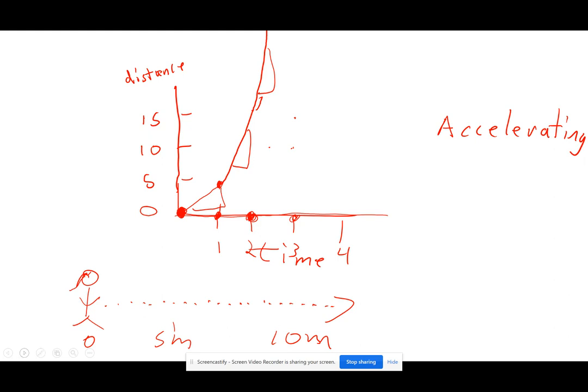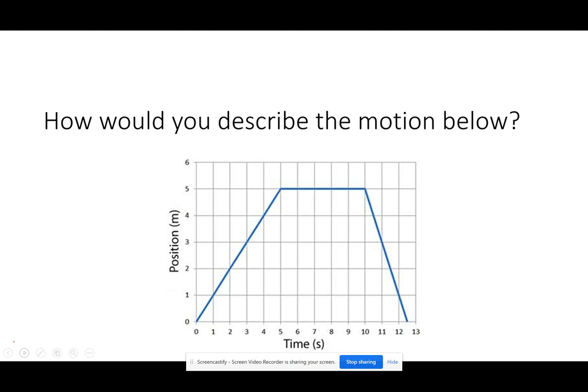Let's practice now by looking at a couple of different graphs and trying to interpret them. How would you describe this motion below? This person is starting at the origin, going at a consistent speed from position 0 to position 5 meters. The person is at 5 meters and is staying there the whole time, from time 5 to time 10 seconds. So here it's uniform, but when they get here, the person stops and is now stationary.